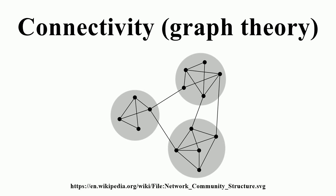It is connected if it contains a directed path from U to V or a directed path from V to U for every pair of vertices U. It is strongly connected or strong if it contains a directed path from U to V and a directed path from V to U for every pair of vertices U. The strong components are the maximal strongly connected subgraphs.